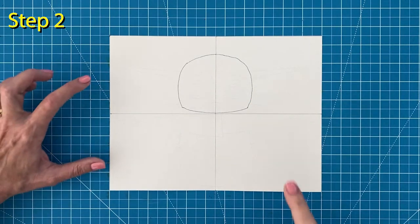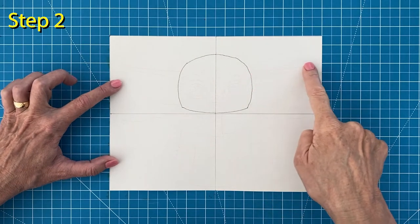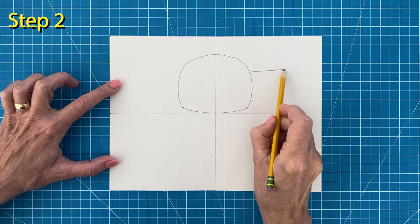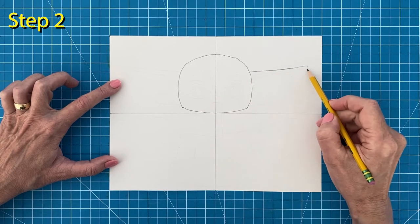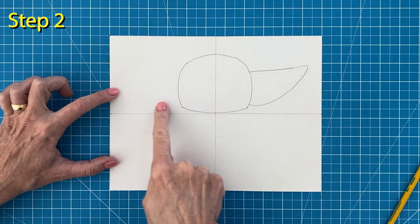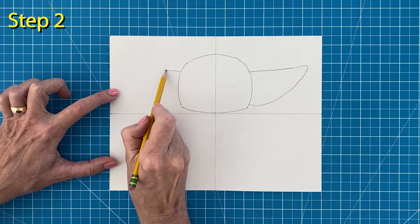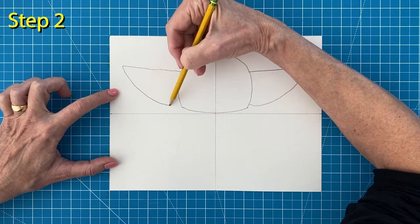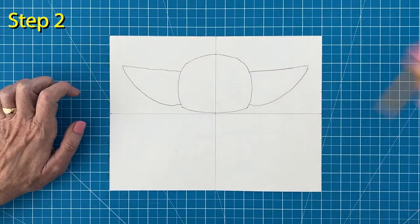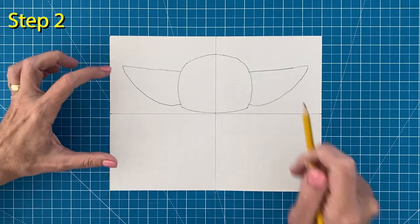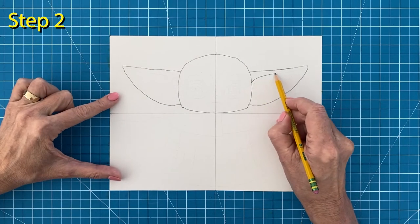Step number two, draw a very large ear on the right. Then add a matching ear on the left. Add the inside line in each ear like this.